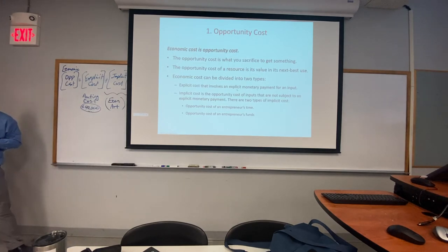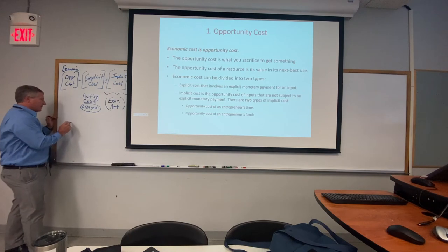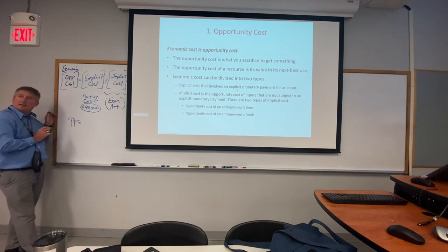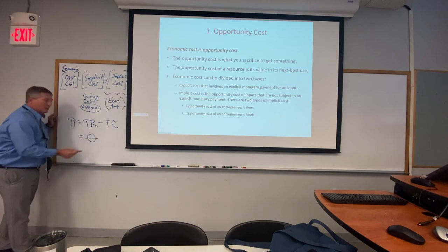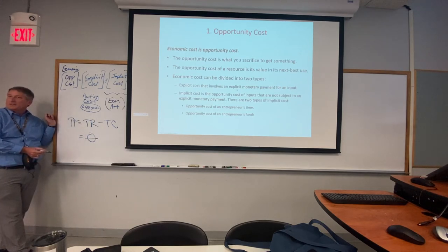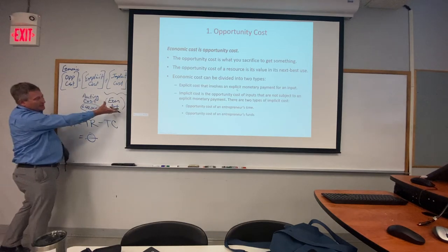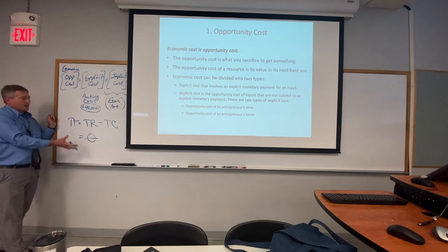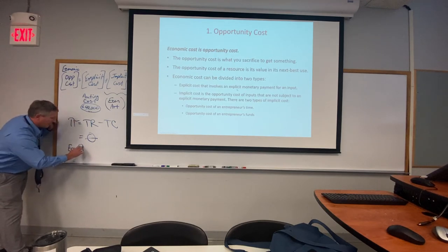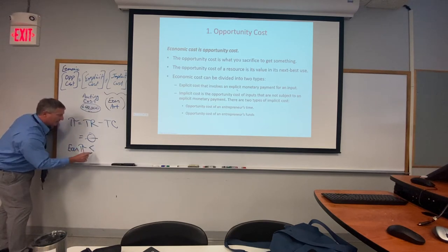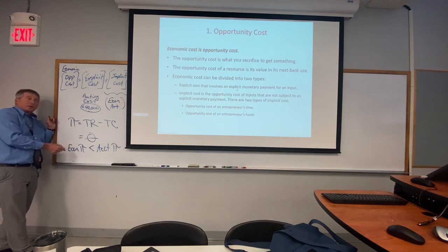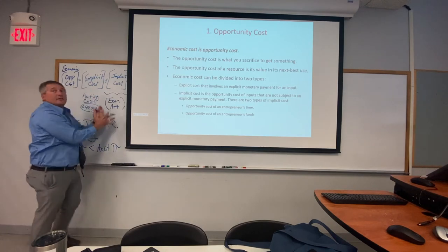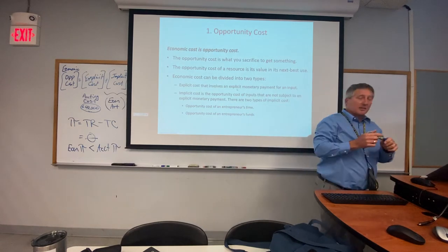Opportunity cost is always larger than accounting cost because it includes both explicit and implicit costs. The profit equation is total revenue minus total cost. If economic profit equals zero, that doesn't mean the business owner is losing money — their implicit costs are included. Economic profit is less than accounting profit because we add implied costs on top of all the accounting costs.